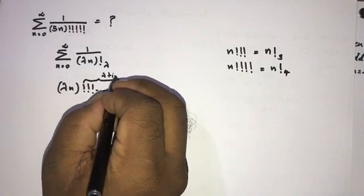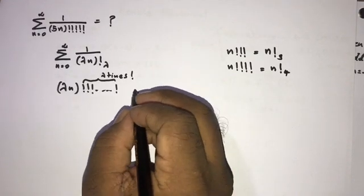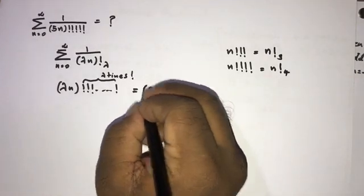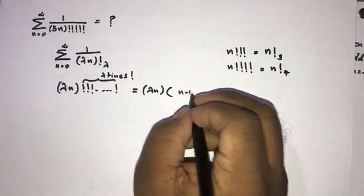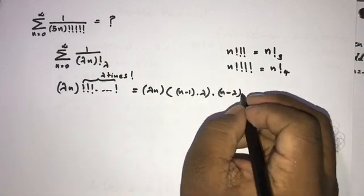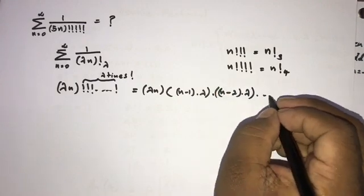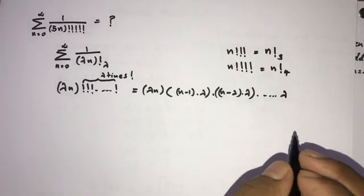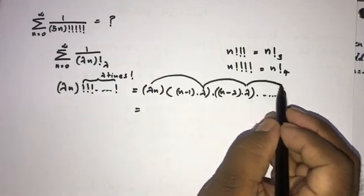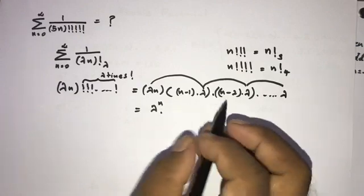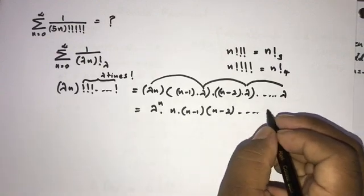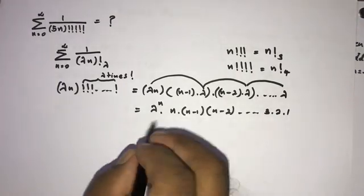We know the multifactorial formula. We can write (lambda·n)!⁽λ⁾ as lambda·n times (lambda·n minus lambda) times (lambda·n minus 2·lambda) and so on, stepping down by lambda each time, giving factors lambda·n, lambda·(n-1), lambda·(n-2), down to lambda·2, lambda·1.